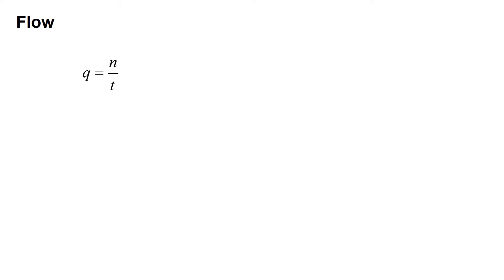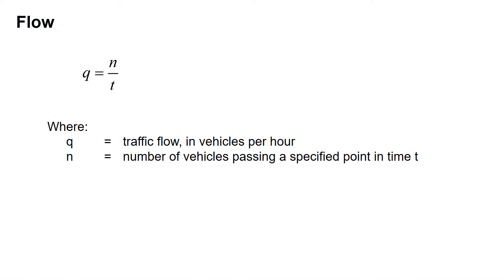Our equation for flow is Q equals N divided by T, where Q is the traffic flow in vehicles per hour, N is the number of vehicles passing a specified point in time T, and T is the duration of the time interval.